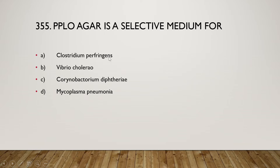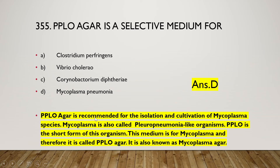Next: PPLO agar is a selective medium for which organism? The right answer is option D, Mycoplasma pneumoniae. PPLO agar is recommended for isolation and cultivation of Mycoplasma species. Mycoplasma is also called pleuropneumonia-like organism, which is the short form PPLO. This medium is for Mycoplasma and therefore it is called PPLO agar, also known as Mycoplasma agar.